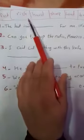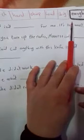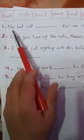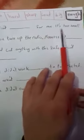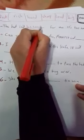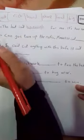Let's start. Number one: The hat isn't for me, it's too small. Yes, isn't big enough. We write the adjective at first, then we put enough.